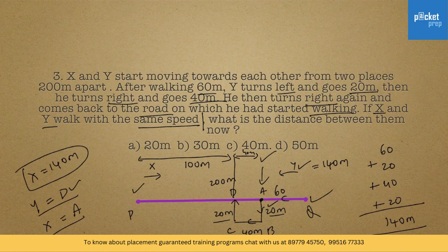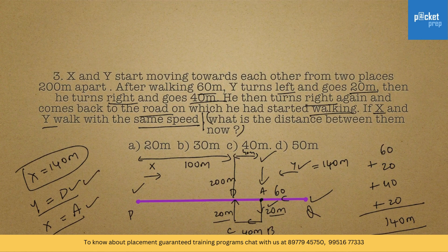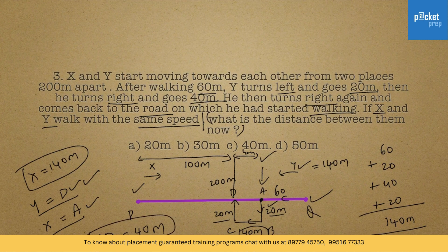As X is at point A and Y is at point D, the distance between them is AD which is equal to 40 meters. So the answer is 40 meters. These questions need a lot of practice — make sure you do it. All the very best.